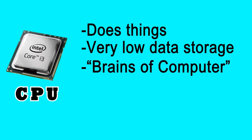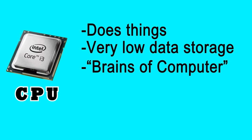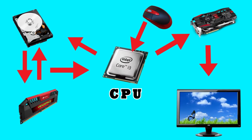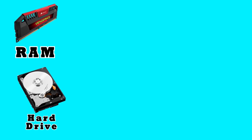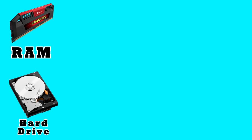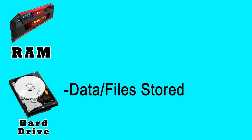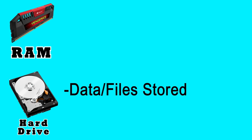The CPU is often referred to as the brain of the computer. Basically everything that happens in your computer goes through your CPU at some point. Your hard drive is where all of your data is stored. When your computer tells you you're running low on space, it's because your hard drive is almost full.